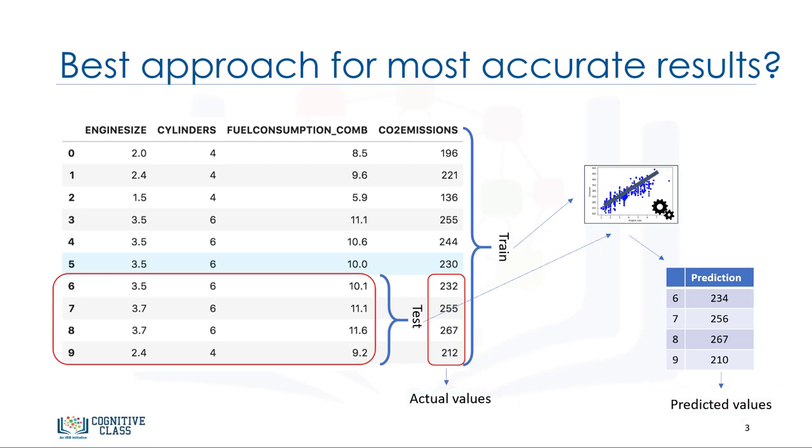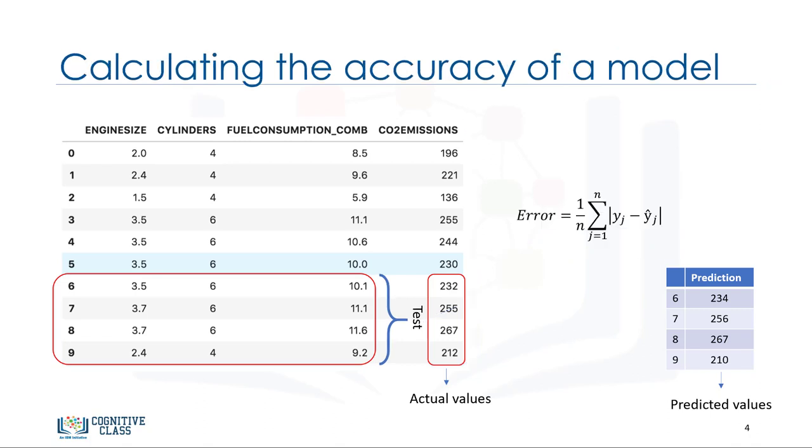There are different metrics to report the accuracy of the model, but most of them work generally based on the similarity of the predicted and actual values. Let's look at one of the simplest metrics to calculate the accuracy of our regression model. As mentioned, we just compare the actual values, y, with the predicted values, which is noted as y-hat for the testing set. The error of the model is calculated as the average difference between the predicted and actual values for all the rows. We can write this error as an equation.